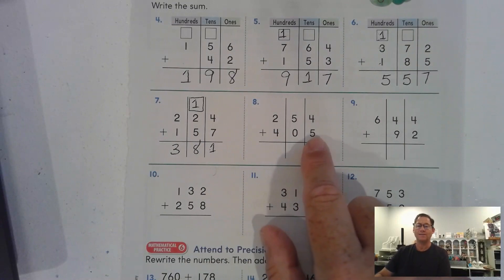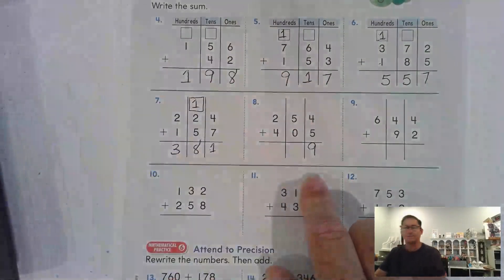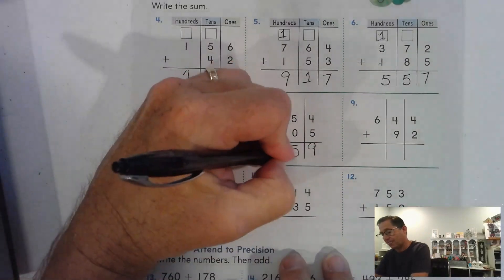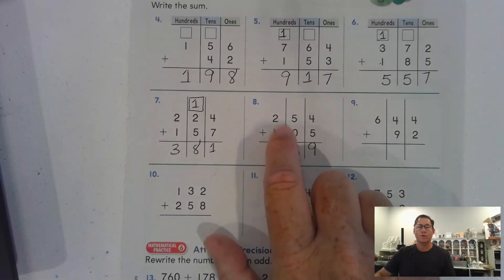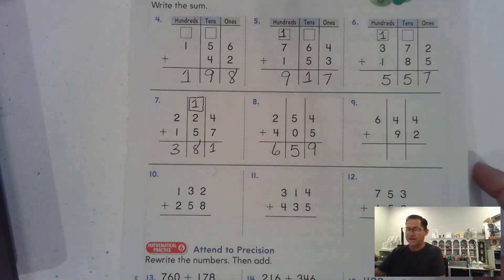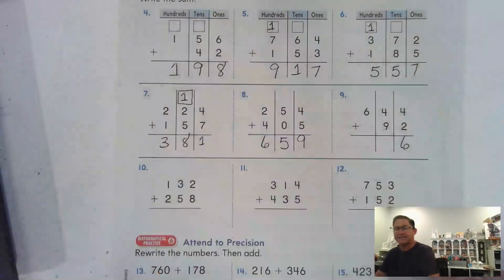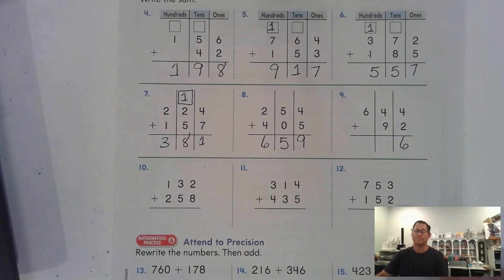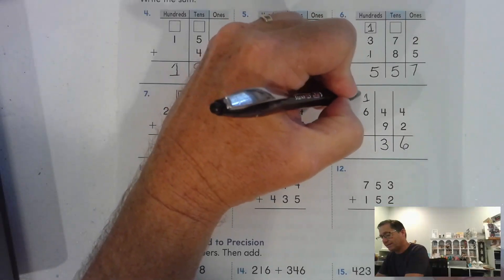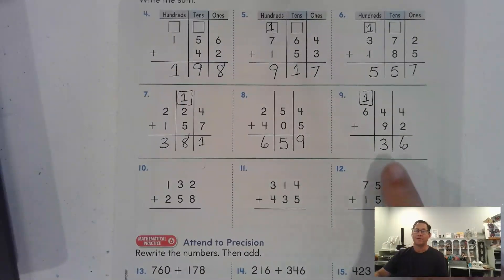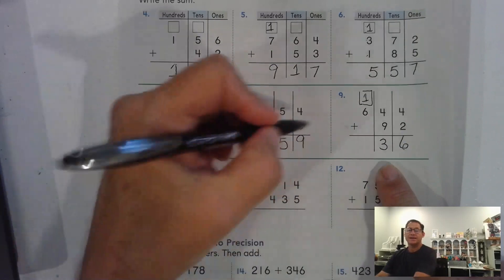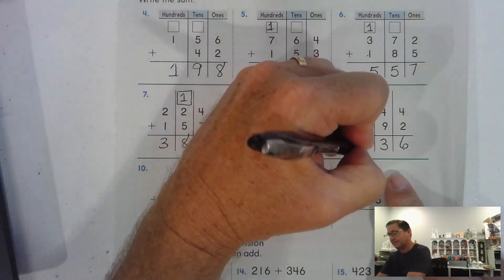Number eight: add the ones, five and four is nine ones — no regrouping. Move to the tens: five and zero is five tens. Four hundred plus two hundred is six hundred. Number nine: four and two is six ones. Nine and four is thirteen tens — regroup as one hundred and three tens. Six hundred plus the regrouped hundred is seven hundred.